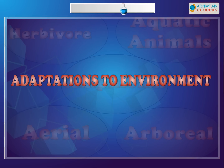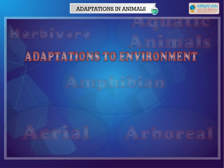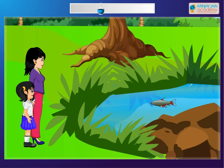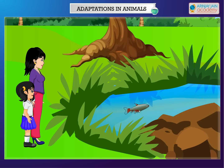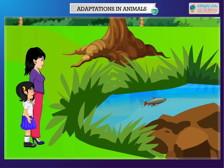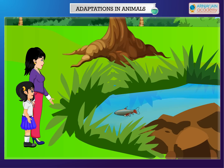Adaptations to Environment. The natural home of an animal is called its habitat. On the basis of their habitat, animals have been placed in five major groups.